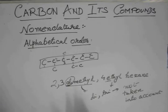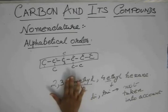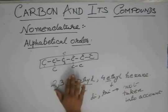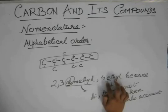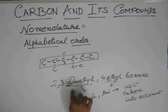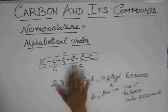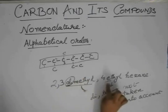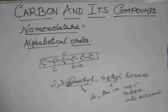So while seeing the alphabetical order, we omit this DI. We don't take DI and TRI in comparing the alphabetical alphabets. We take only methyl and ethyl. If it would have been diethyl, still we would have omitted the DI. So methyl and ethyl. Now see, if you omit this DI, we see again that E comes before M. So again, this four ethyl should come before this two, three dimethyl.